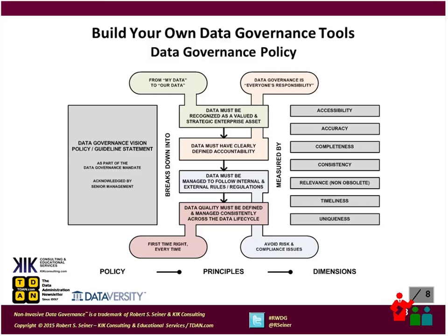The second principle is data must have clearly defined accountability. We need to know who in the organization has responsibility for defining data, for producing data, and for using data. Not only do we need to identify who those people are, but we need to record that information and put it somewhere we can use it. For example, if there's a change to a specific piece of data — a change to a calculation for a key piece of information — we need to know who is going to be impacted. I want to share a tool we can use to not only identify the people that define, produce, and use data, but to help them understand what accountability comes with being a definer, producer, or user of the data.